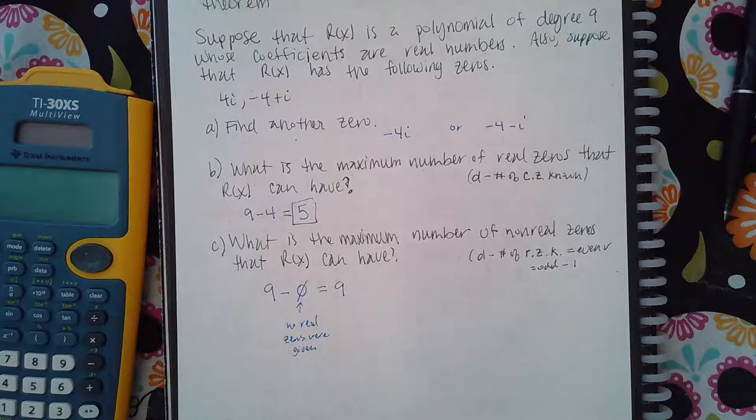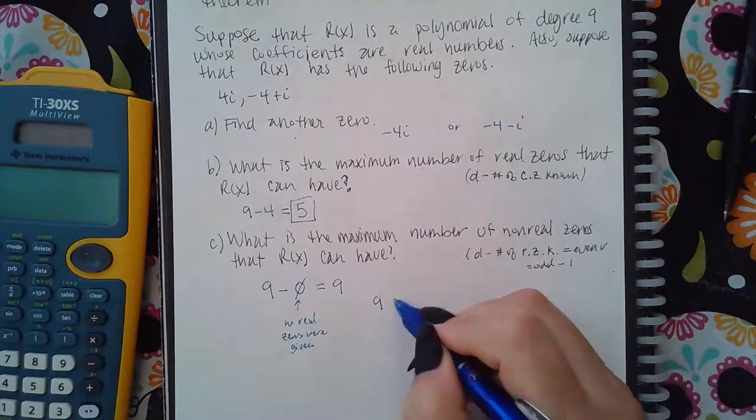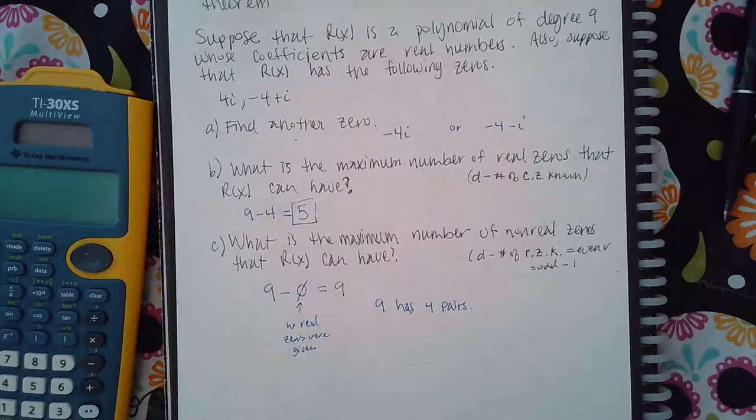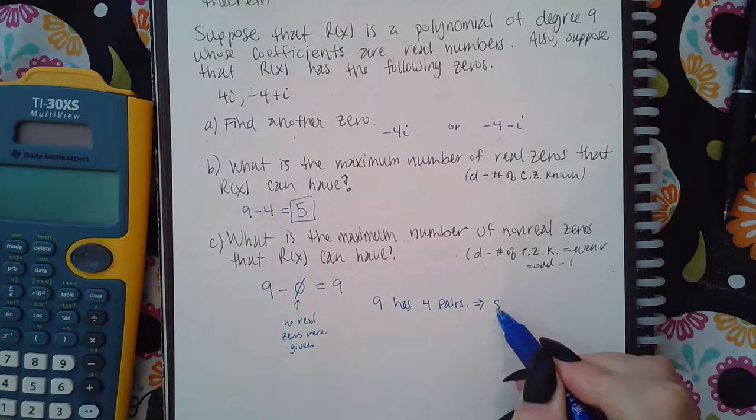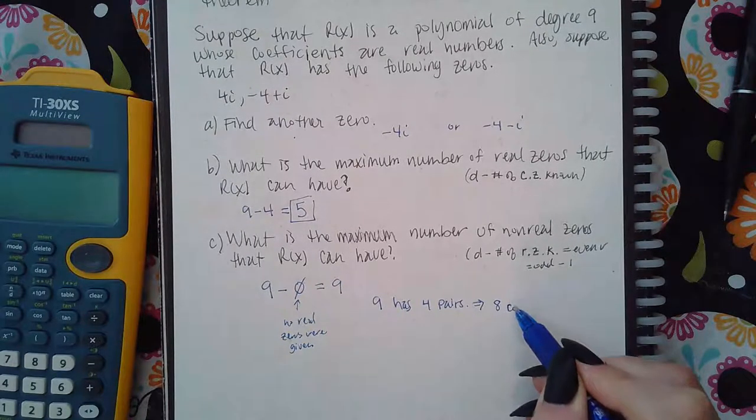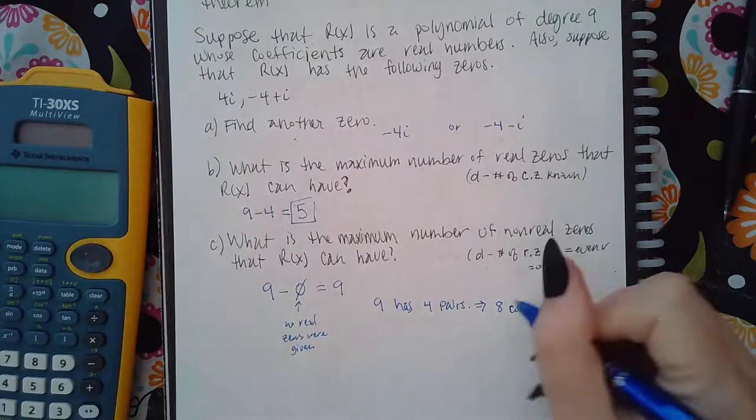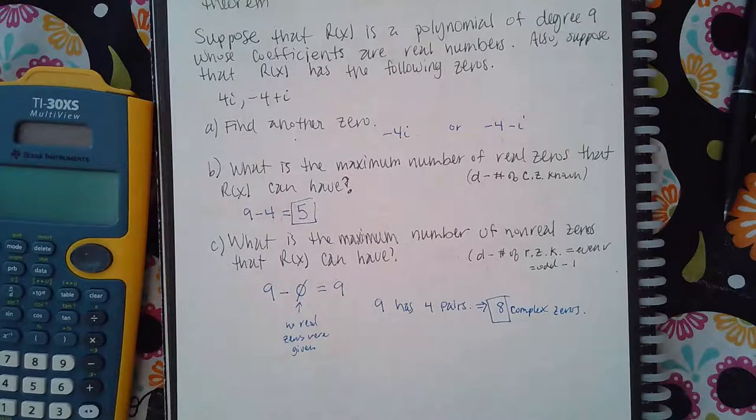Now, if that were an even number. We know that imaginaries come in pairs. Nine can have 4 pairs. If each of those 4 pairs are imaginary, that would mean there are 8 complex zeros. So 8 would be the maximum number of non-real zeros.